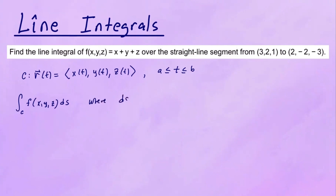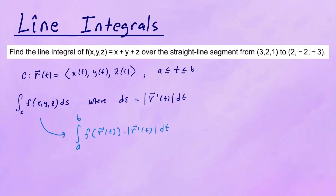Here DS is the arc length element, and this is going to be equal to the magnitude of R prime of T, dT. So these are the components you have to remember every time you're evaluating a line integral. You can also write the integral as the integral from A to B of F of R of T times the magnitude of R prime of T, dT — composing F of X, Y, Z with the respective parametrization.